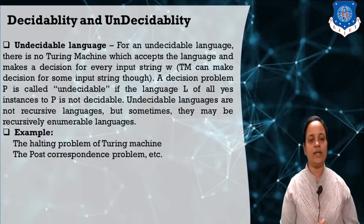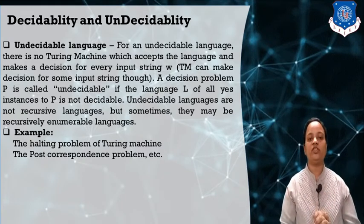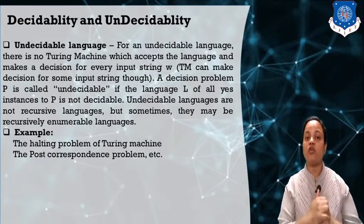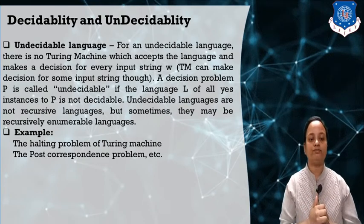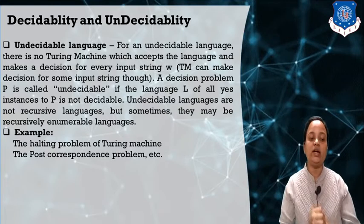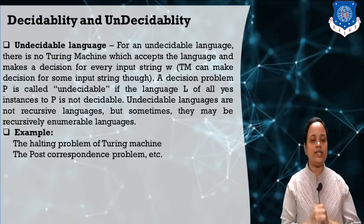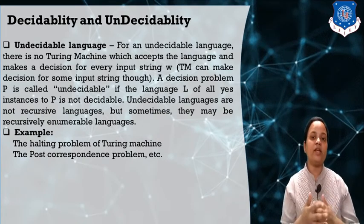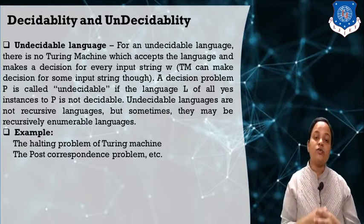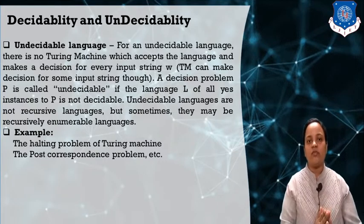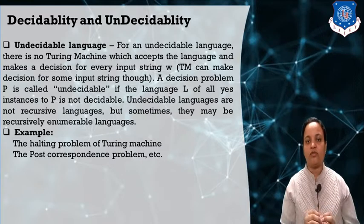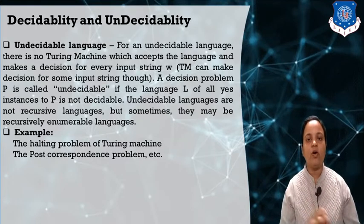What is the meaning of undecidability? For an undecidable language, there is no Turing machine which accepts the language and makes a decision for every input string, though a Turing machine can make a decision for some input strings. A decision problem T is called undecidable if the language L of all yes-instances is not decidable. Undecidable languages are not recursive languages, but sometimes they may be recursively enumerable languages — where the Turing machine either reaches an accepting state, enters an infinite loop, or reaches a rejecting state.